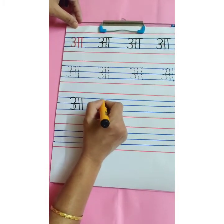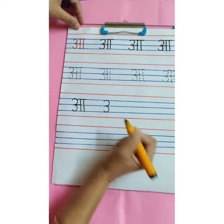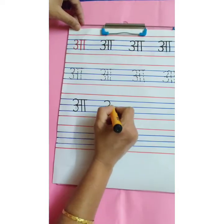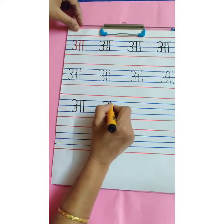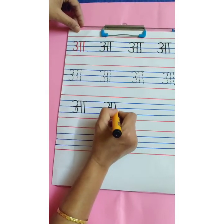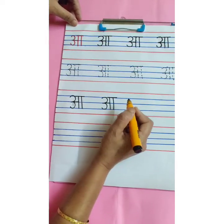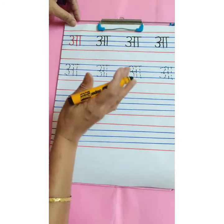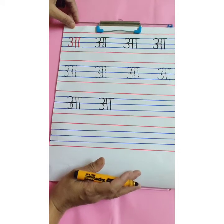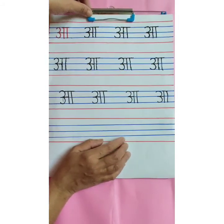One more time: start with the first blue line, write number 3, then small sleeping line, then standing line and then one more standing line and small sleeping line overhead. This way you are going to complete your remaining page. After completing the work, your page will look like this. Now it's time for home assignment.